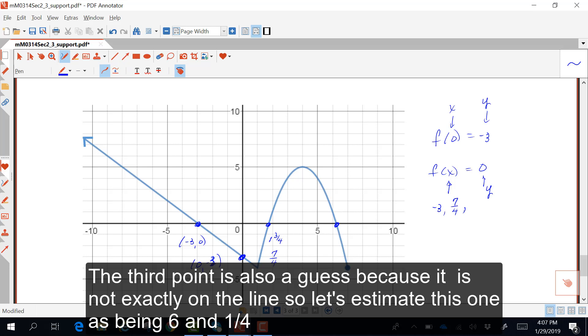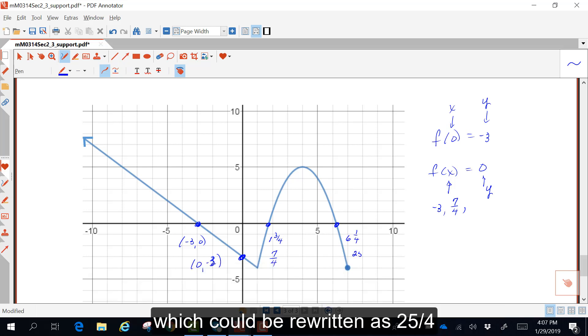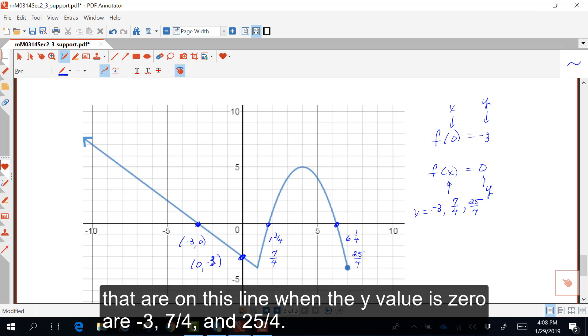The third point is also a guess, because it's not exactly on the line. So, let's kind of estimate this one as being 6 and 1 fourth, which could be rewritten as 25 fourths. So, the 3 x values that are on this line when the y value is 0 are negative 3, 7 fourths, and 25 fourths.